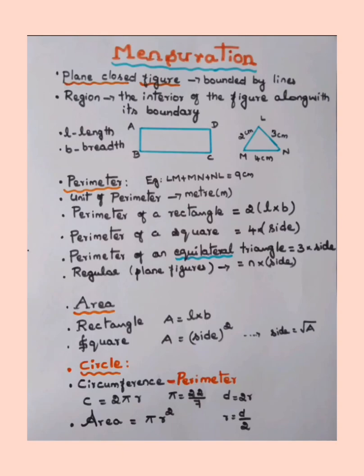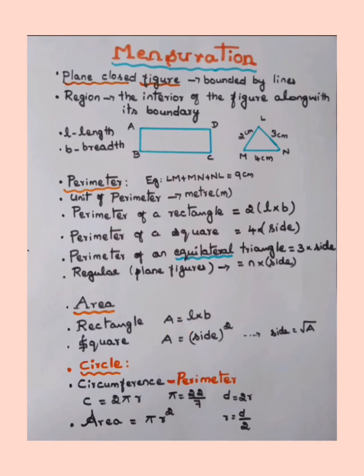The formula to calculate the area of a rectangle is: A = length × breadth. Just check for the length and breadth; if directly given, multiply them together to get the area of the rectangle.